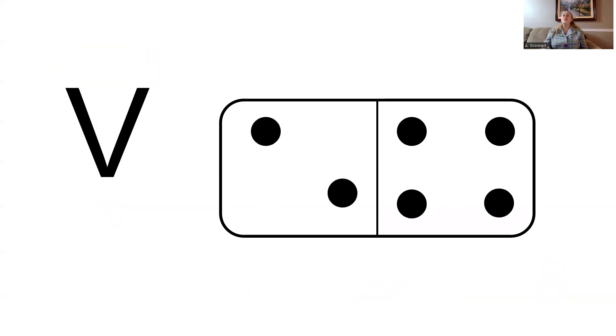Here we have another domino and I'm going to go ahead and make a number tree out of this domino. So the parts of the domino are 2 and 4.